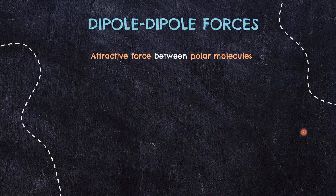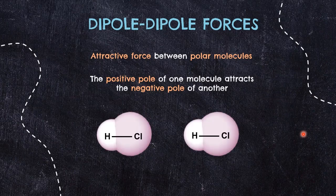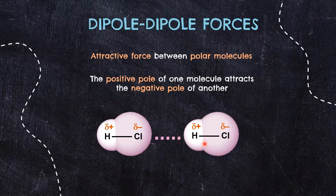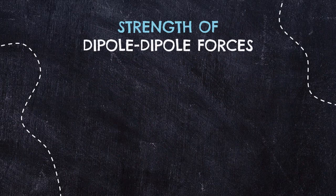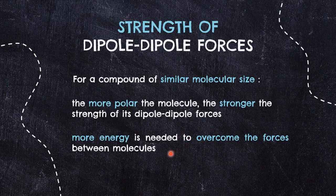The attractive forces between polar molecules take place between the positive pole of one molecule and the negative pole of another. As with hydrogen chloride, a molecule with partially positive hydrogen and partially negative chlorine will move so as to always be making electrostatic interactions between the negative end of one dipole and the positive end of another. When comparing the strength of dipole-dipole forces, we usually look for polar molecules with similar molecular size. If a molecule is more polar, its dipole-dipole forces are stronger, and therefore more energy is needed to overcome them.